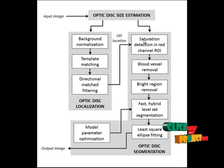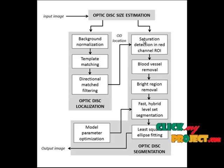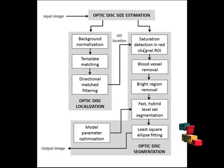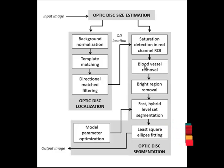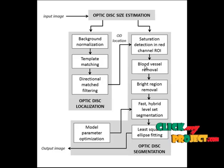After locating the OD regions, we provide the OD segmentation. In the first step of OD segmentation, we provide saturation detection in the red channel ROI. The region of interest is the cropped OD region, and in the red channel of the retinal images, we find the saturation detection. Next, for blood vessel removal, we use ASF to perform a morphological close-open filter with a series of structural elements of increasing size, which allows us to remove vessels while retaining the shape of the papillary region.